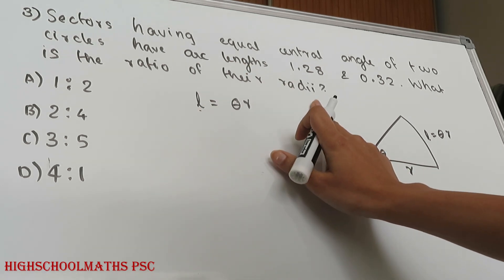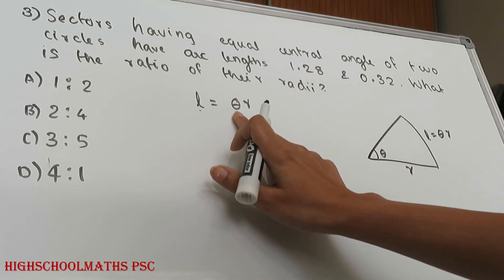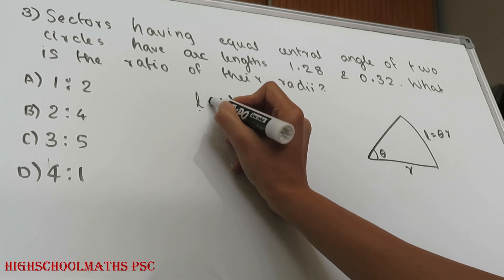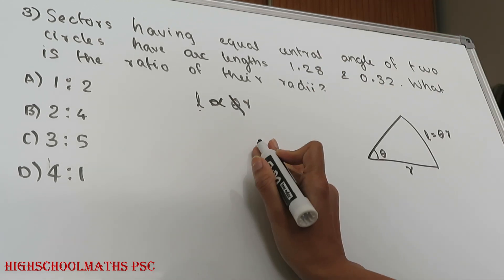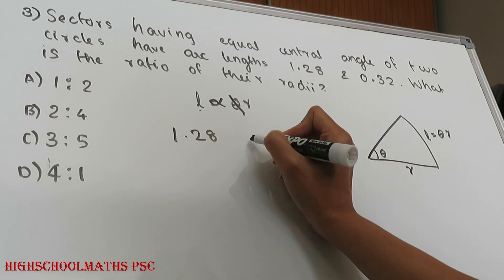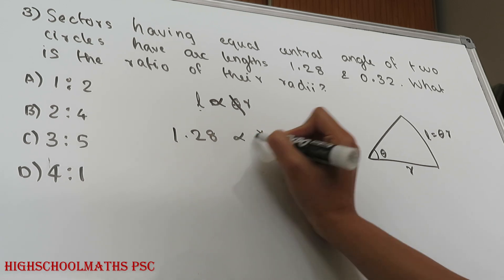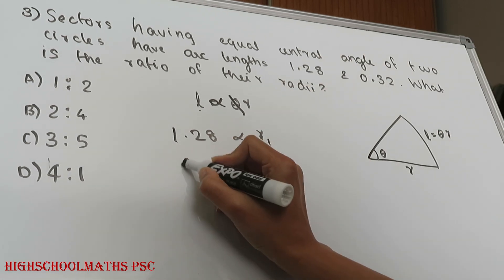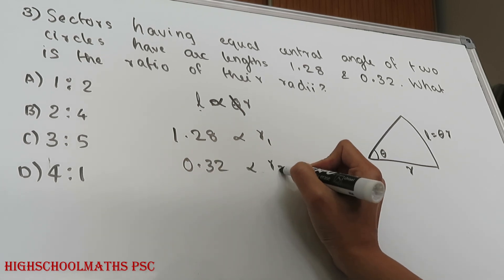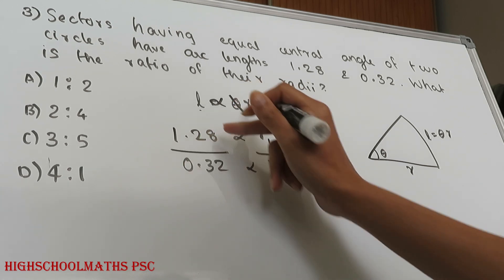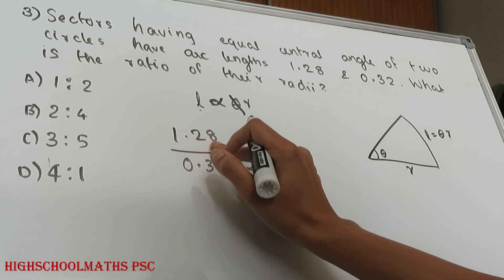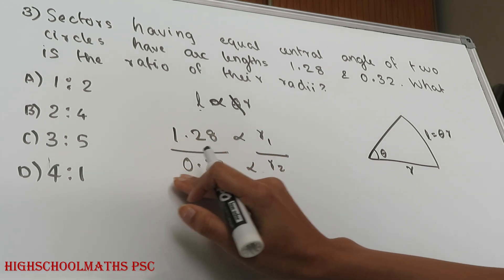This is the ratio of their radii. Since the central angles are equal, the arc length is directly proportional to the radius. The first arc length is 1.28 and the second arc length is 0.32.